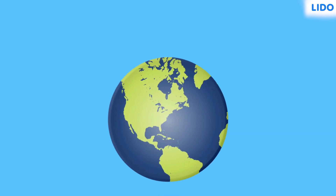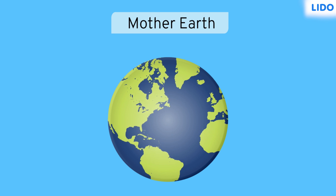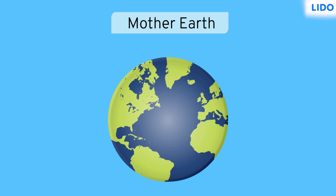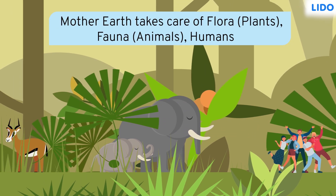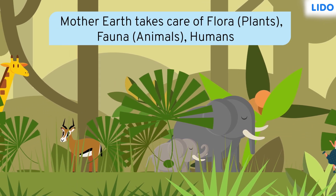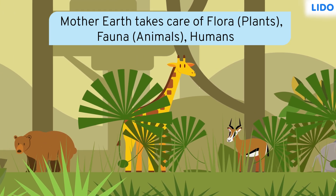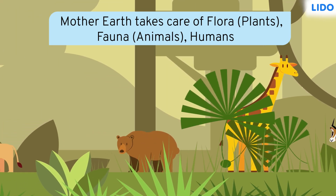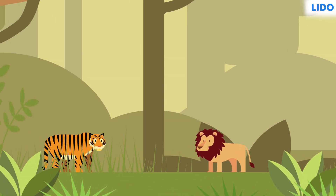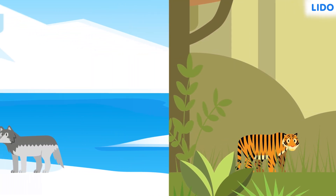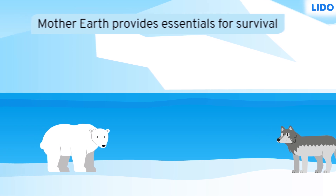Hi there! We call the earth our mother earth. It is so because it is the only place where life is possible. Not only humans but enormous wild animals, flora and fauna exist on earth. Everything is born here and mother earth takes care of all. Life exists on earth because all living organisms get the essentials to survive from mother earth itself.